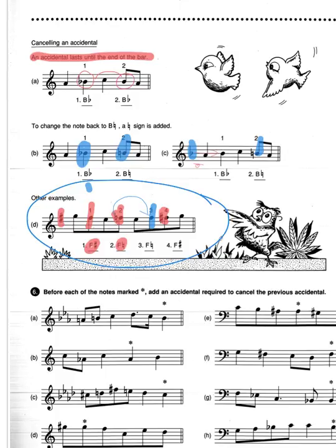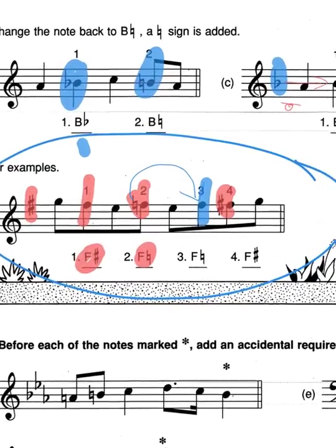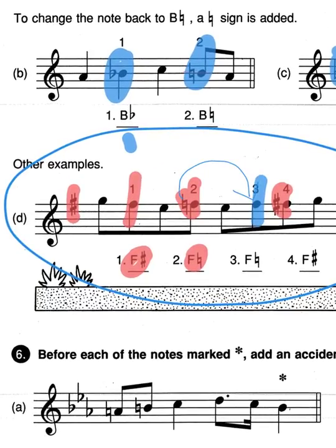So let's just look at this one more time together. This sharp sign makes that an F-sharp. The composer decides to make that an F-natural, which in turn makes that one an F-natural.